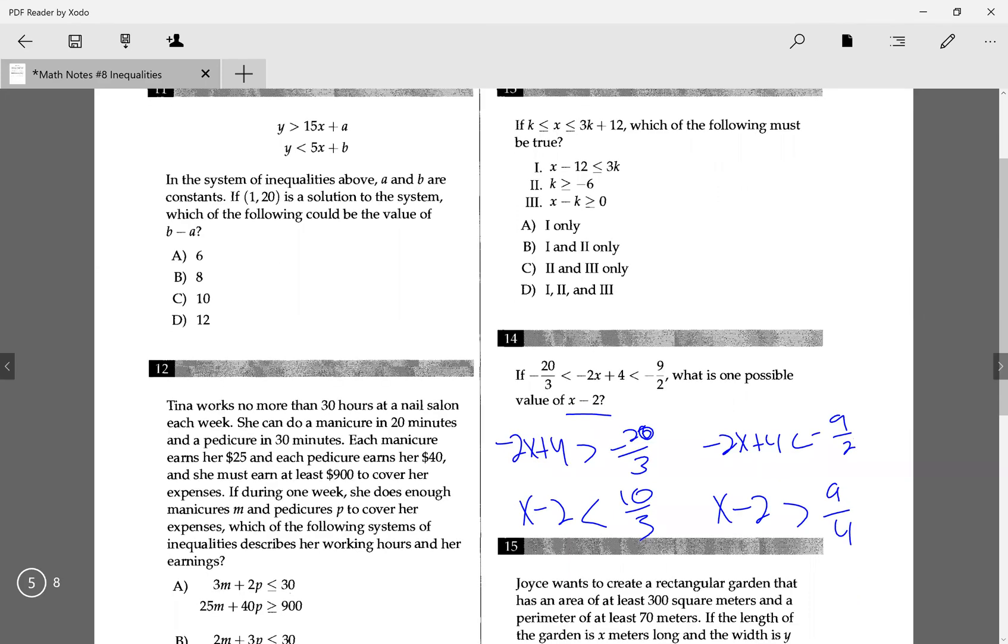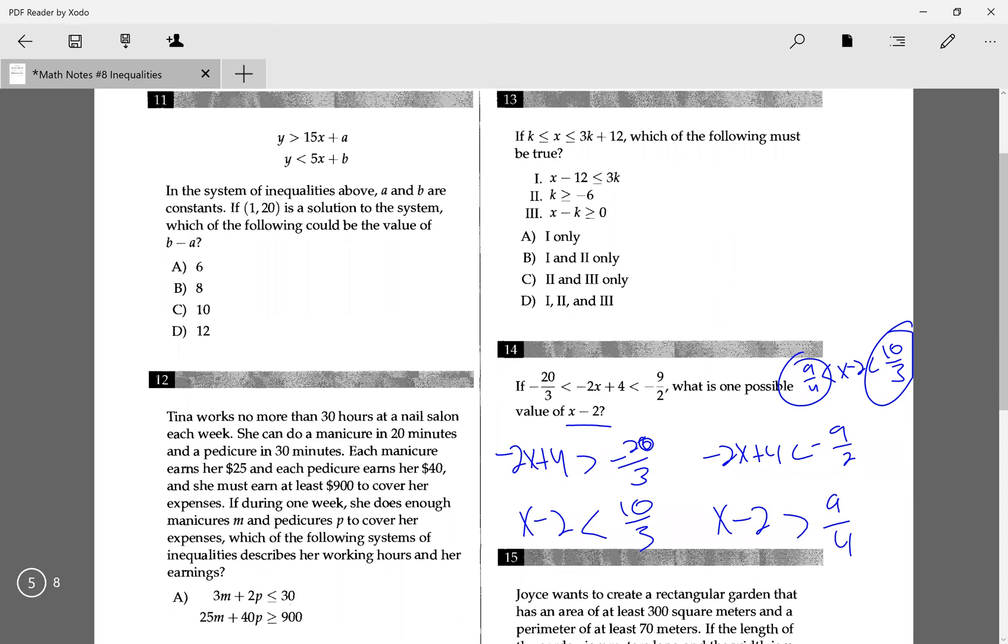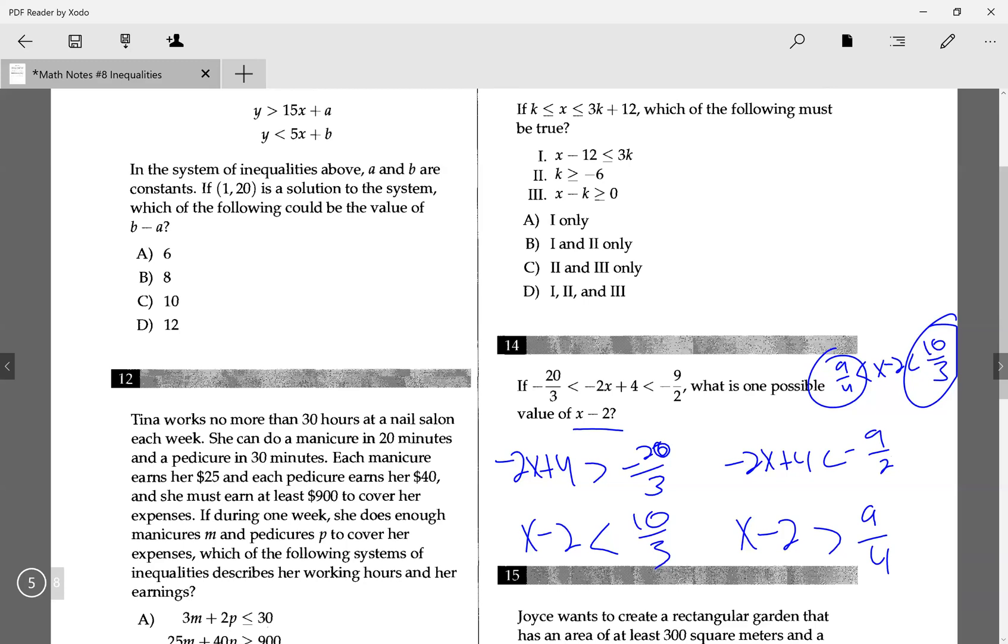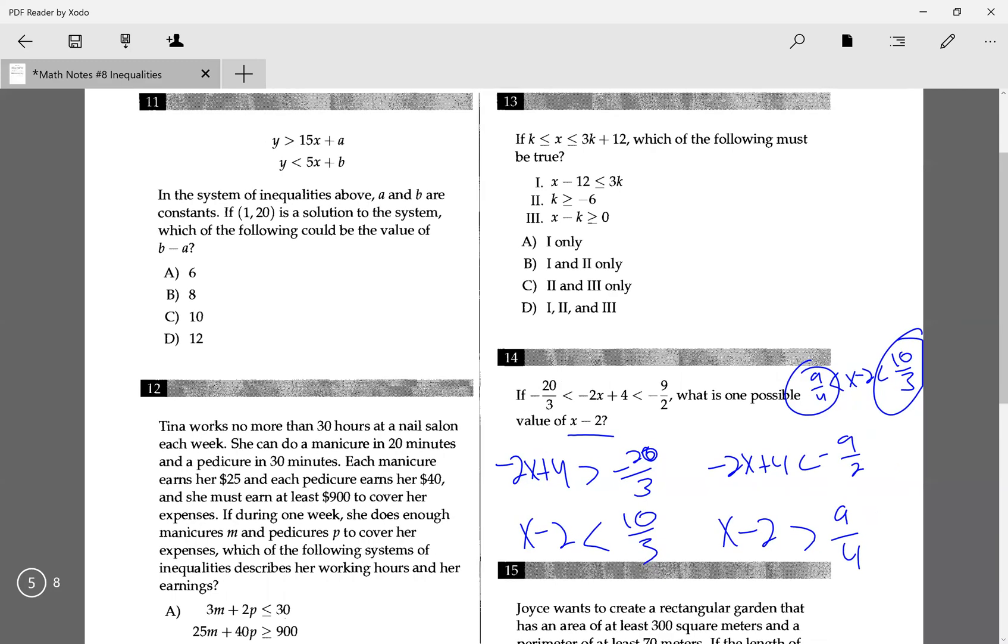If I write this all out, I would get 9 over 4 is less than x minus 2, which is less than 10 over 3. So I want one possible value of x minus 2, I want a value that's in between 9 over 4 and 10 over 3. If you notice in decimals, that's around 2.25, I believe, and that's around 3. So in this case, any solution between those two fractions will work. I think 3 in general is between these two, if I'm not mistaken.